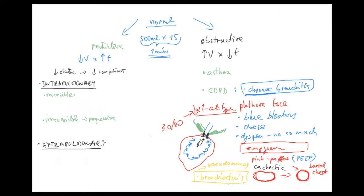Here we can put lung edema in general, whatever the cause, and then to be more specific: left heart failure and pneumonia. This is reversible — if you have lung edema and give diuretics, it resolves. If someone has bacterial pneumonia and you give antibiotics, again it's reversible.